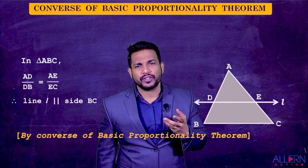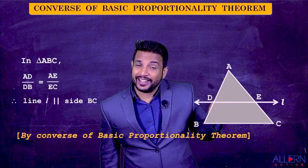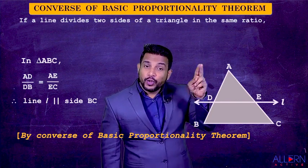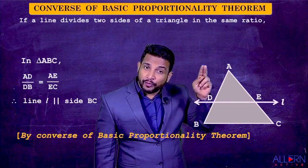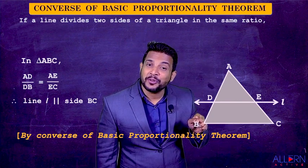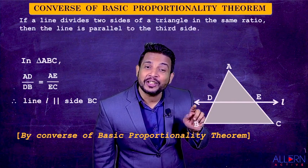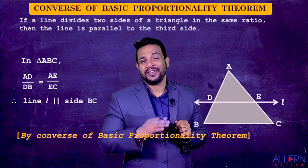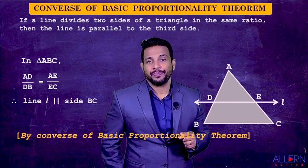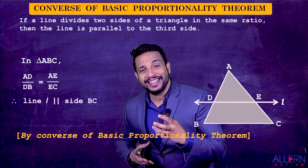We can put this in the form of a statement. It is very simple: if a line divides two sides of a triangle in the same ratio, then the line is parallel to the third side. That concept is called the Converse of the Basic Proportionality Theorem.